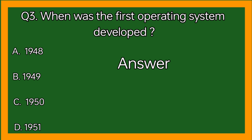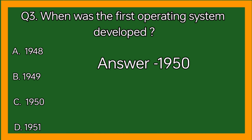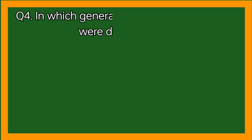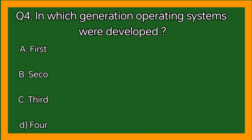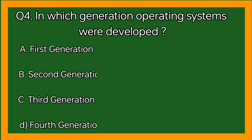Correct answer: 1950. Question 4: In which generation were operating systems developed? Option A: First generation, option B: Second generation, option C: Third generation, option D: Fourth generation.